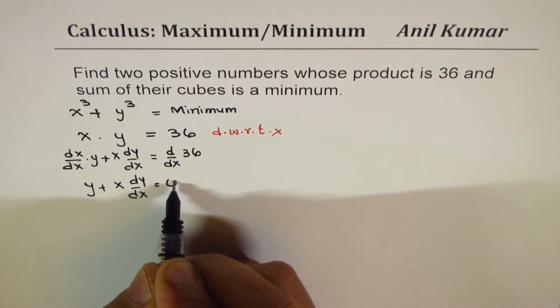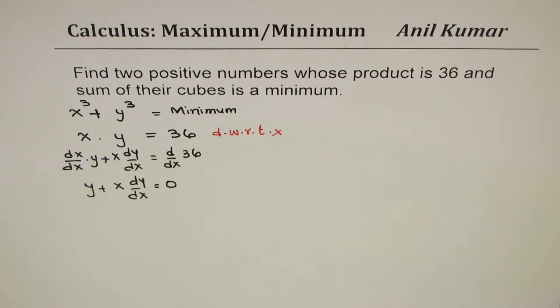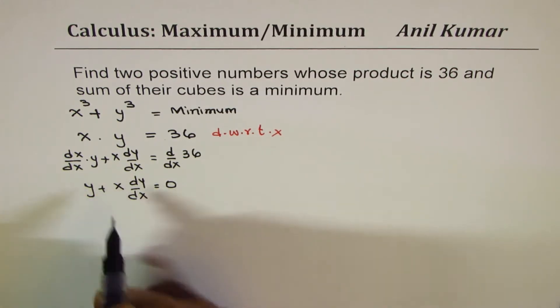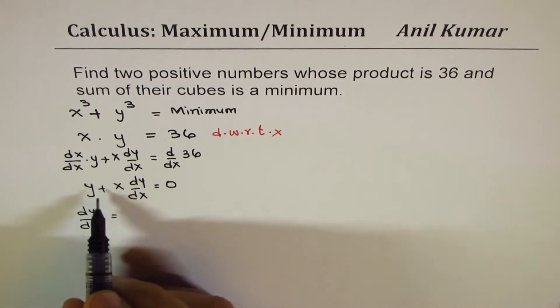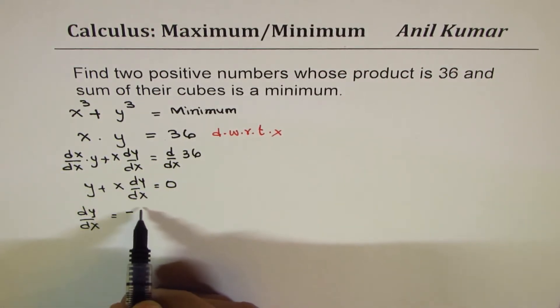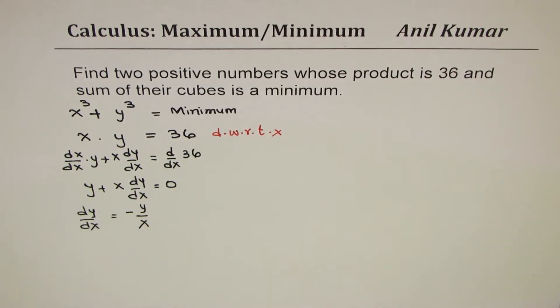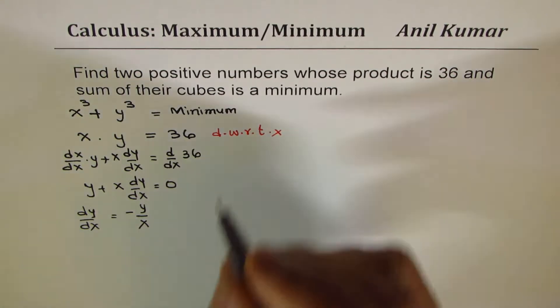This equals zero since the derivative of a constant is zero. Now we can rearrange and write dy/dx in terms of x and y. Taking y on this side we get -y, then divide by x, so that becomes dy/dx = -y/x in terms of x and y.